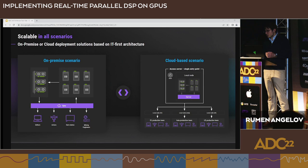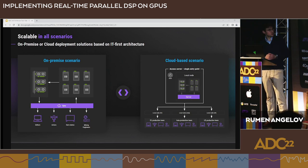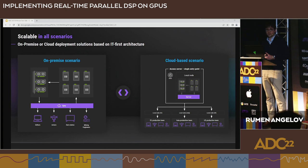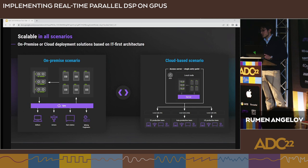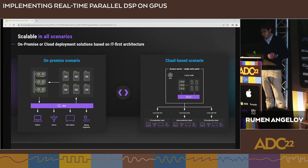One of the important things we also need to look into when working with GPUs is scalability. The solution we have currently allows you to develop once and then use it either on-premises or on a cloud-based solution, as we presented yesterday in the workshop. You implement once and it runs on both local machines or workstations on-premise or in the cloud.